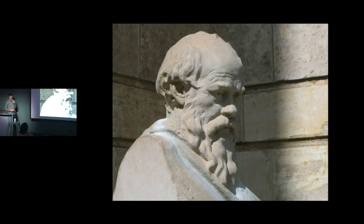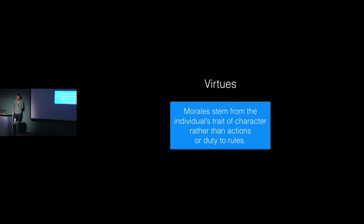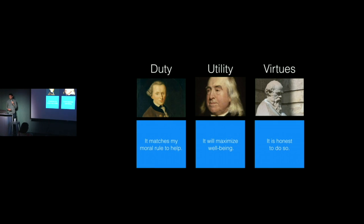This approach is known as utilitarianism, or utility. The belief promotes that we should maximize the well-being for the majority of a population. The third ethical approach is virtues ethics, started with Socrates in Greece. Virtues ethics states that people are motivated by moral character — the choices you make represent you and your values. To recap, we have these three ethics: duty, utility, and virtues.